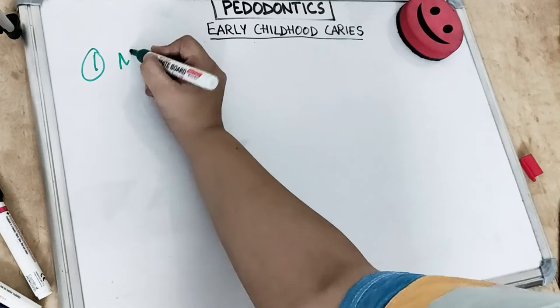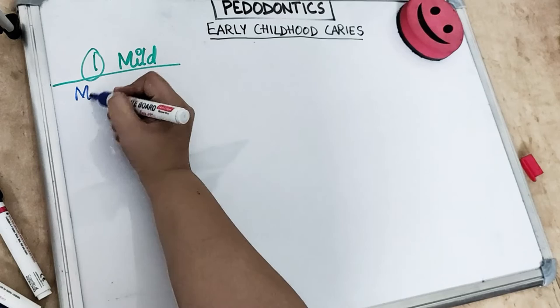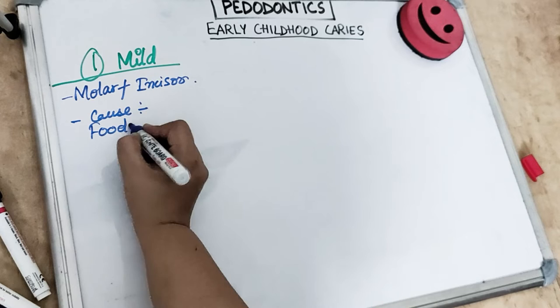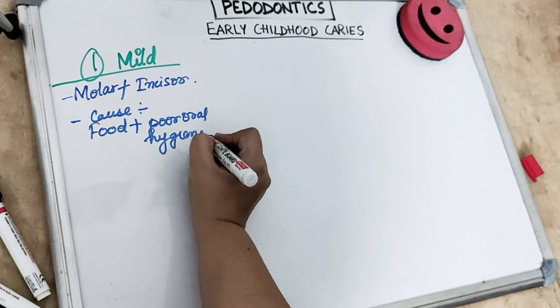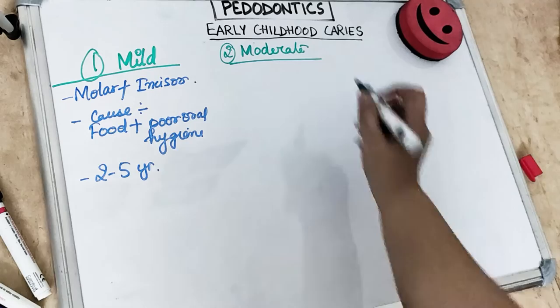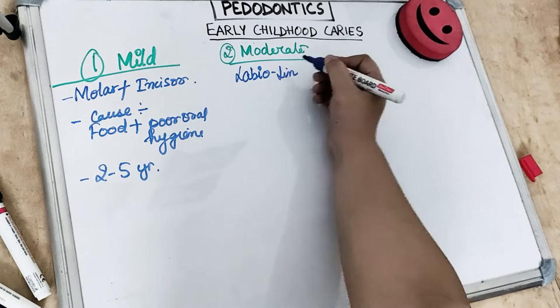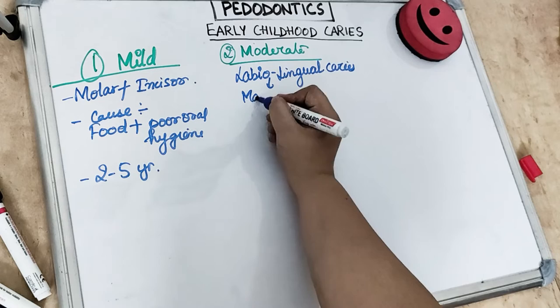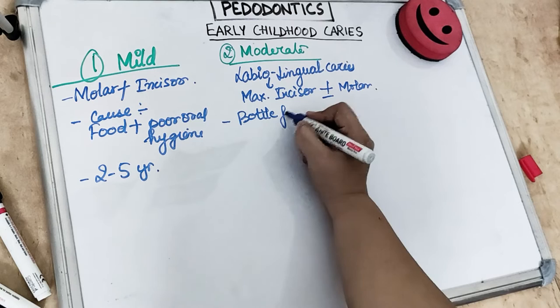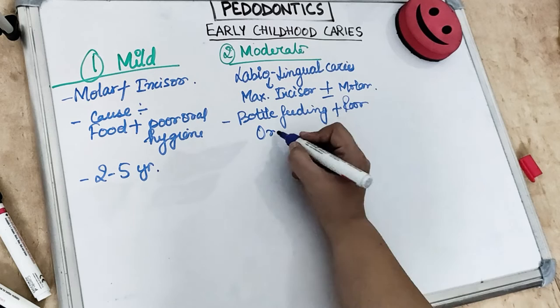Type 1 — mild caries — are isolated lesions involving the molars and incisors. The cause is a combination of cariogenic food and poor oral hygiene, and it is commonly found in children aged 2 to 5 years. Type 2 — moderate ECC — presents as labio-lingual lesions extending from labially to lingually, involving the maxillary incisors, with or without molar involvement. The most common cause is bottle feeding or at-will breastfeeding along with poor oral hygiene.